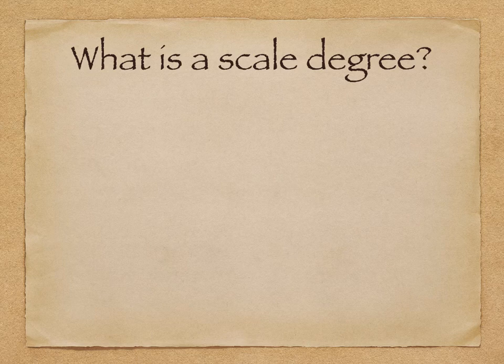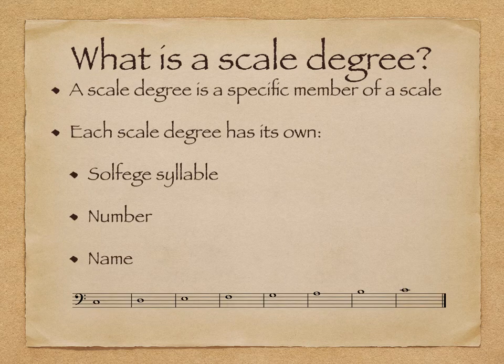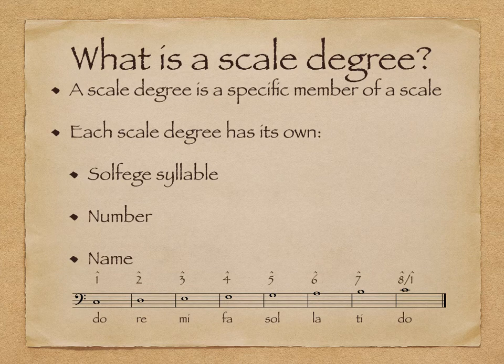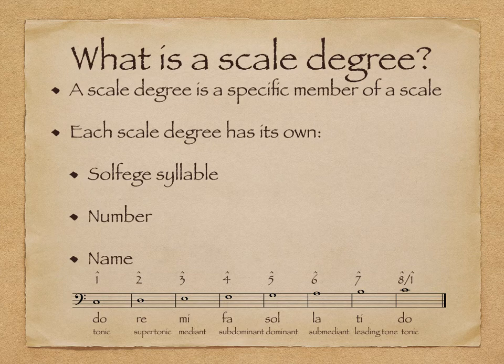A moment ago I said that C was scale degree 1, but what is a scale degree? A scale degree is a specific member of a scale. Each scale degree has its own solfege syllable — Do, Re, Mi, Fa, Sol, La, Ti, Do — its own number, 1 through 8 (and 8 can also be 1), with a little caret above to indicate scale degree number, and its own name: Tonic, Supertonic, Mediant, Subdominant, Dominant, Submediant, Leading Tone, and Tonic again.